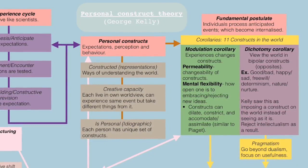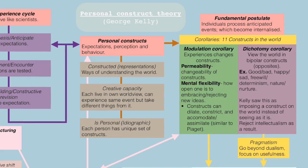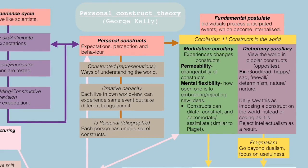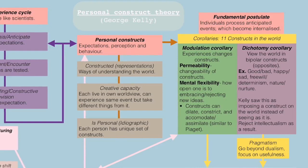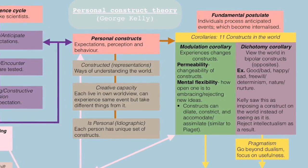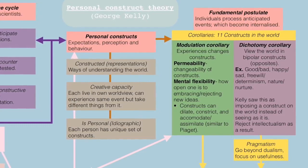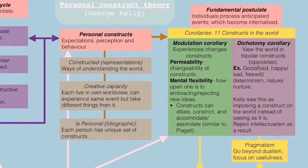To highlight two of these 11 corollaries: the modulation corollary is where experiences can change our constructs. It has a degree of permeability in which constructs are changeable. There is mental flexibility depending on how open one is to embracing or rejecting new ideas. Constructs can dilate, constrict, accommodate, and assimilate — very similar to Piaget's theory on cognitive development.